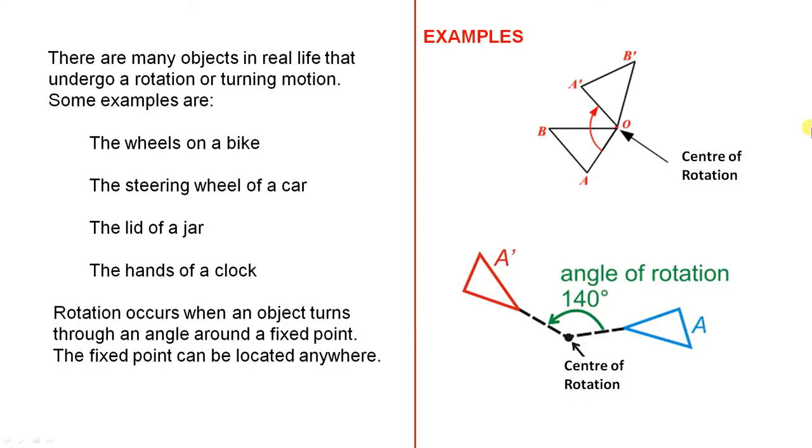There are many objects in real life that undergo a rotation or turning motion. Some examples are the wheels on a bike, the steering wheel of a car, the lid of a jar, and the hands of a clock.